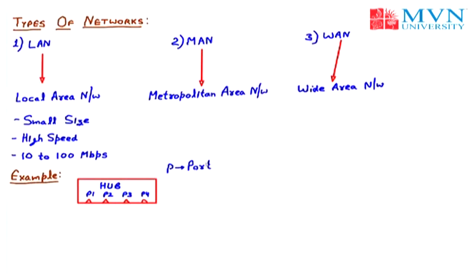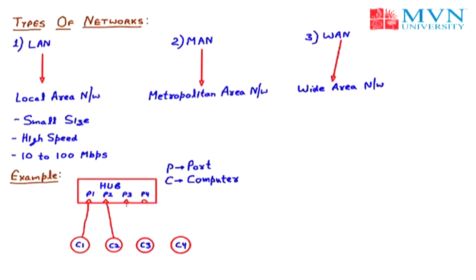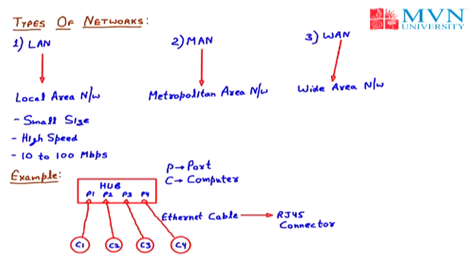We have four computers — C1, C2, C3, and C4 — and four ports in the hub. They are interconnected correspondingly with Ethernet cables, also called LAN cables. The blue cable you have seen in labs is an Ethernet cable. This complete system — the combination of computers, ports, a LAN device, and Ethernet cables — is called a LAN. The connector used in the Ethernet cable is of the RJ45 type.